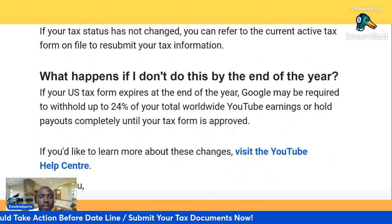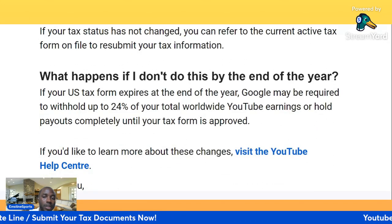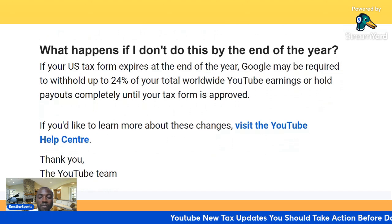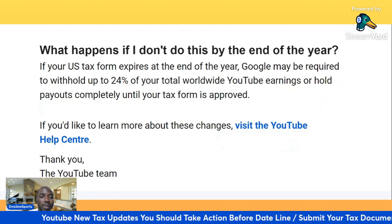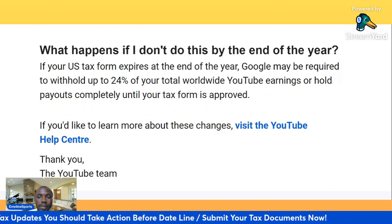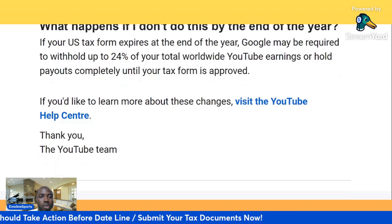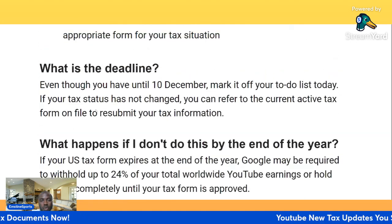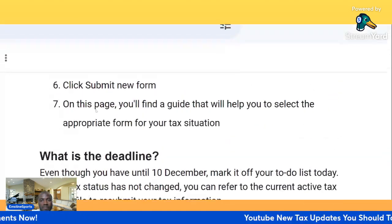What happens if you don't do this by the end of the year? This is the penalty: if your US tax form expires at the end of the year, Google may be required to withhold up to 24% of your total worldwide YouTube earnings, or withhold payment completely until your tax form is approved.